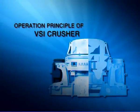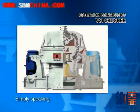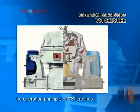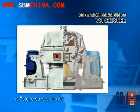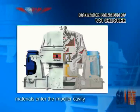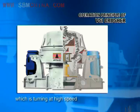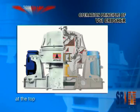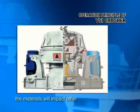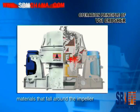Operation Principle of VSI Crusher. Simply speaking, the operation principle of VSI Crusher is stone strike stone. That is, materials enter the impeller cavity, which is turning at high speed, at the top. With centrifugal force, the materials will impact on other materials that fall around the impeller.